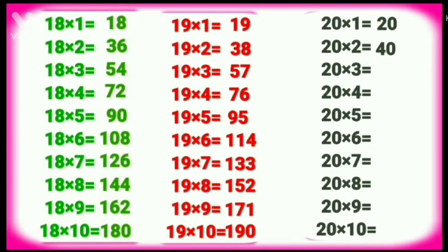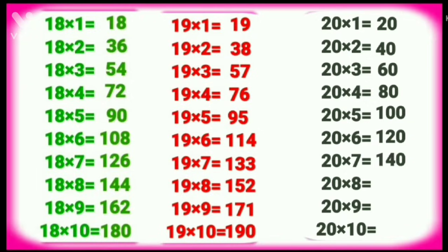Twenty ones are twenty. Twenty twos are forty. Twenty threes are sixty. Twenty fours are eighty. Twenty fives are one hundred. Twenty sixes are one twenty. Twenty sevens are one forty. Twenty eights are one sixty. Twenty nines are one eighty. Twenty tens are two hundred.